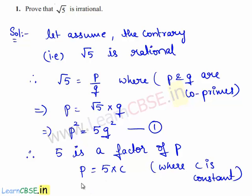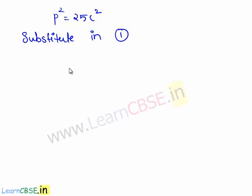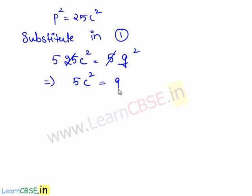Now we square this equation — that is, p squared is equal to 25c squared. Now we shall substitute p squared equals 25c squared into equation 1. So we have 25c squared is equal to 5q squared. Since 5 goes into 25 five times, this implies 5c squared is equal to q squared.